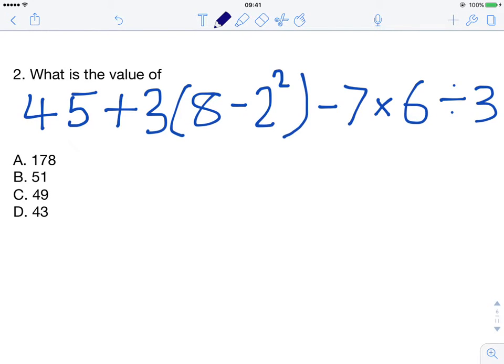This is question 2 from the 2009 KCP Maths paper. The question is: what is the value of 45 plus 3 and then in brackets 8 minus 2 to the power 2 or 2 squared, close brackets, minus 7 multiplied by 6 divided by 3.